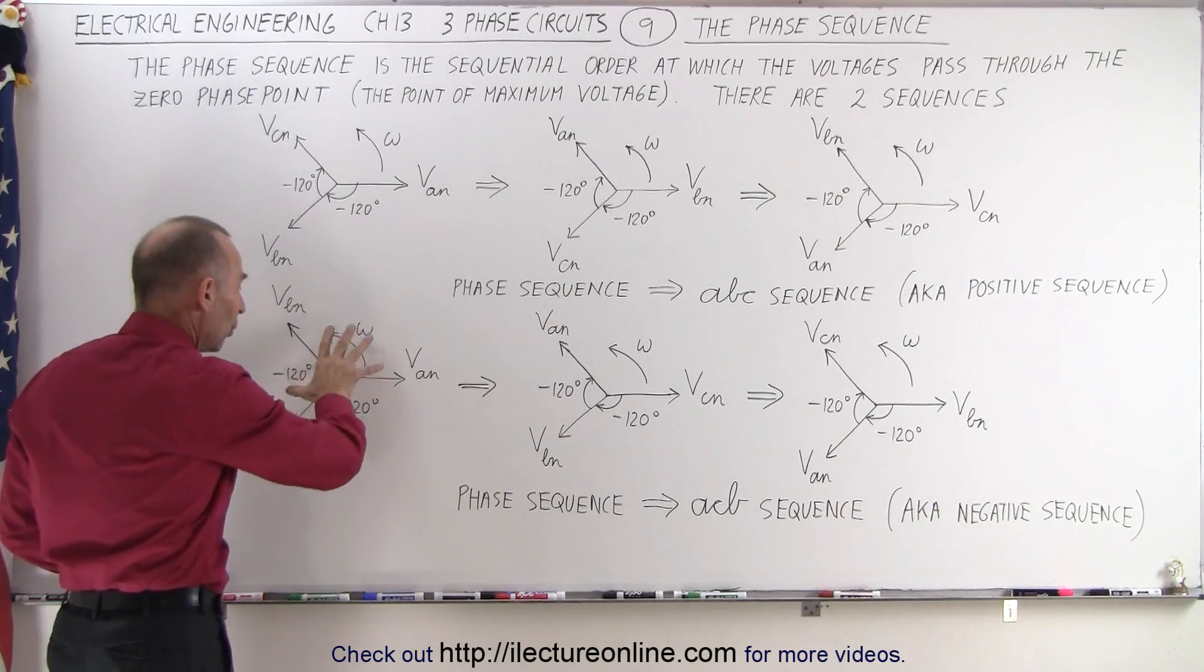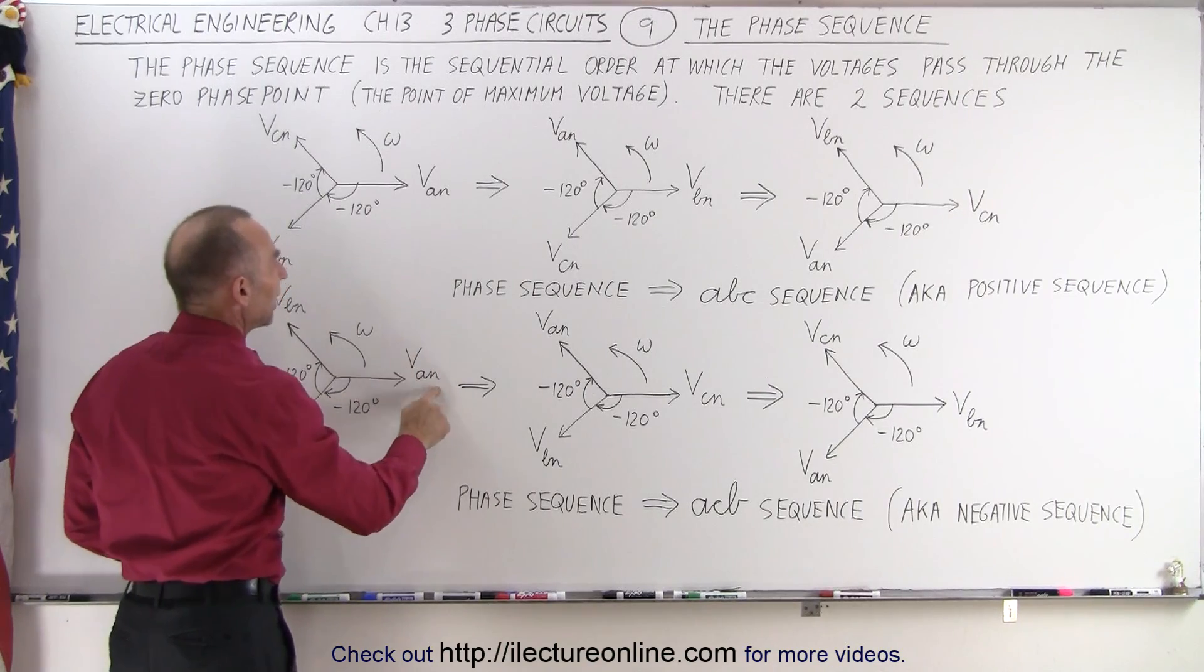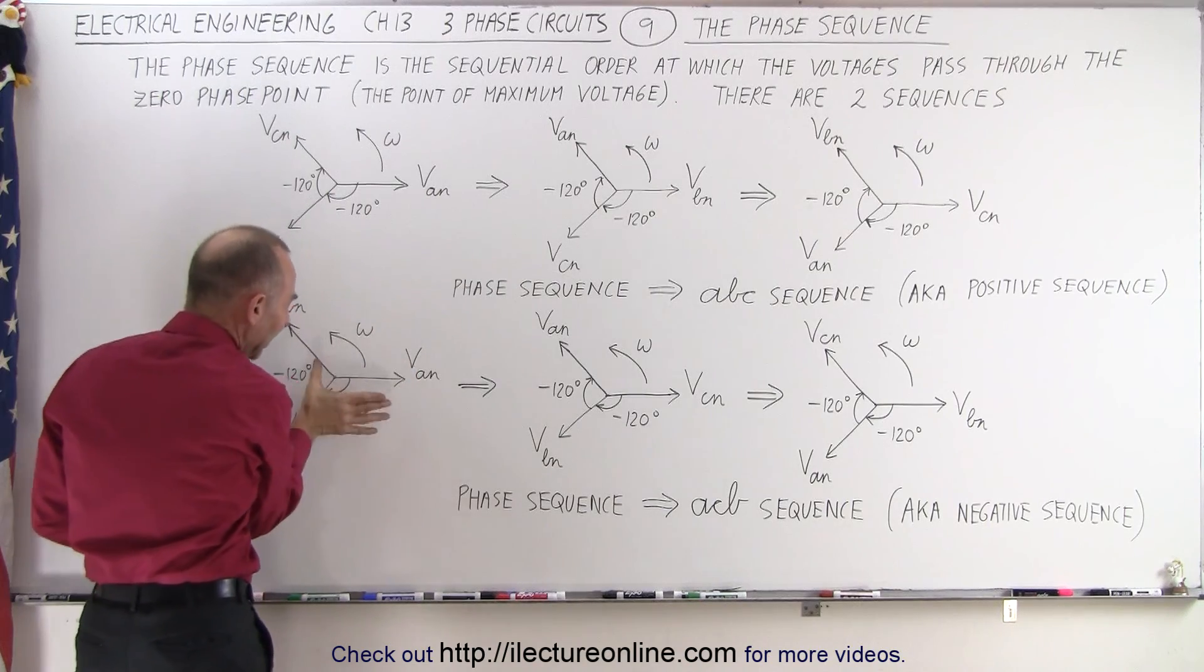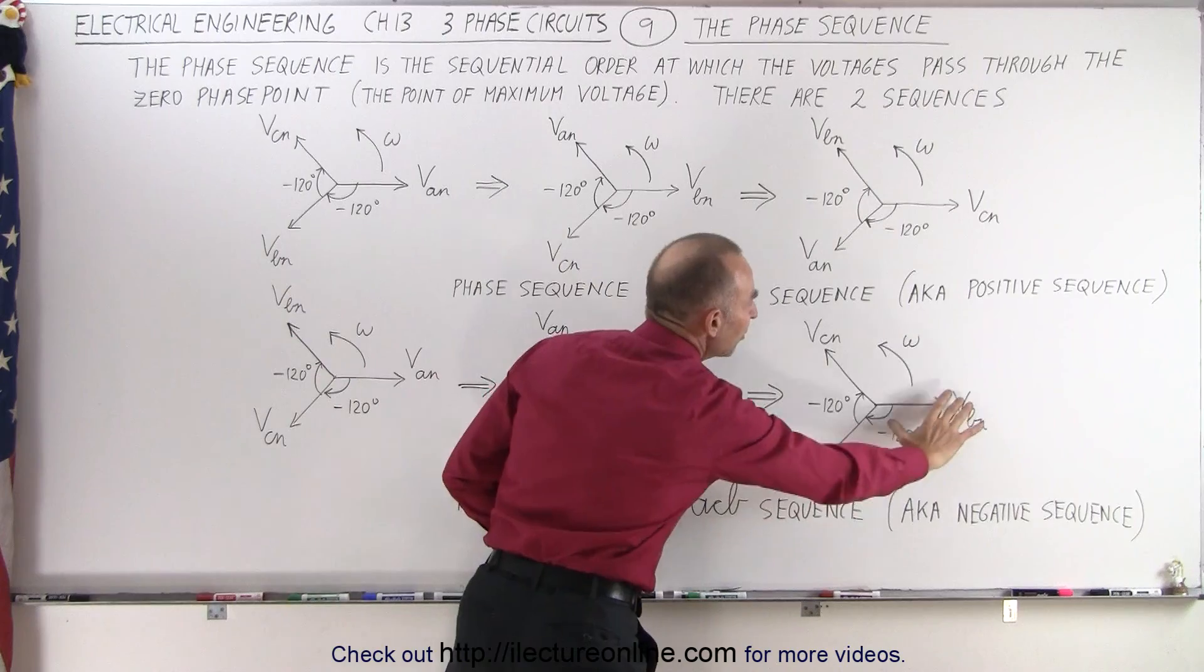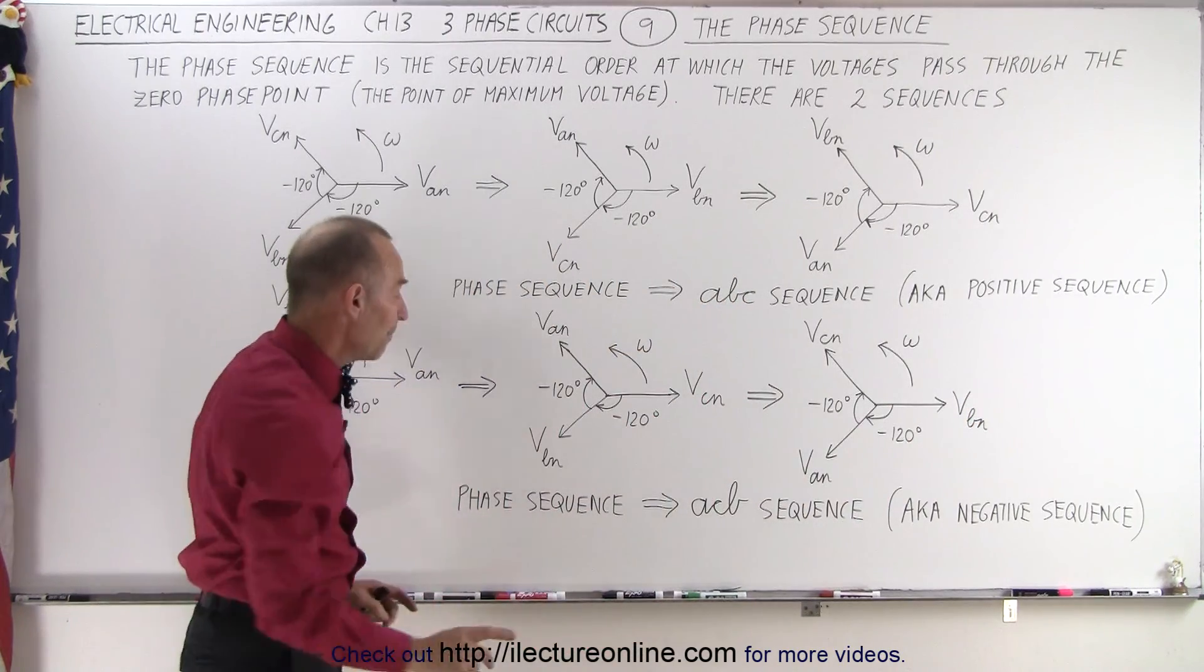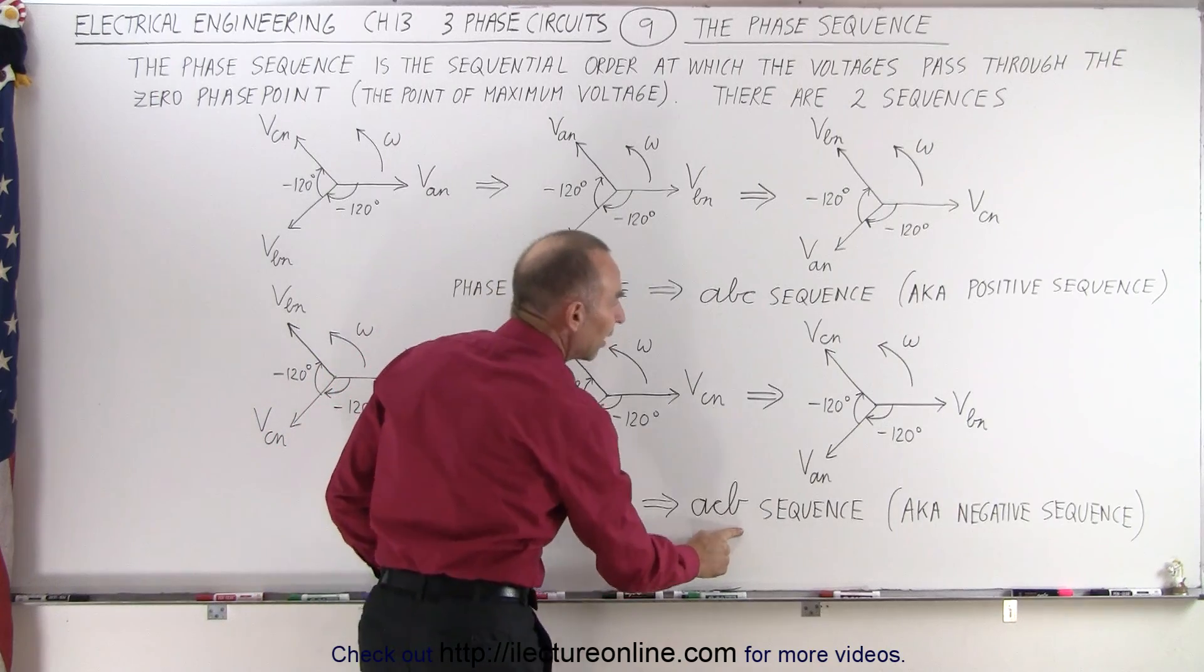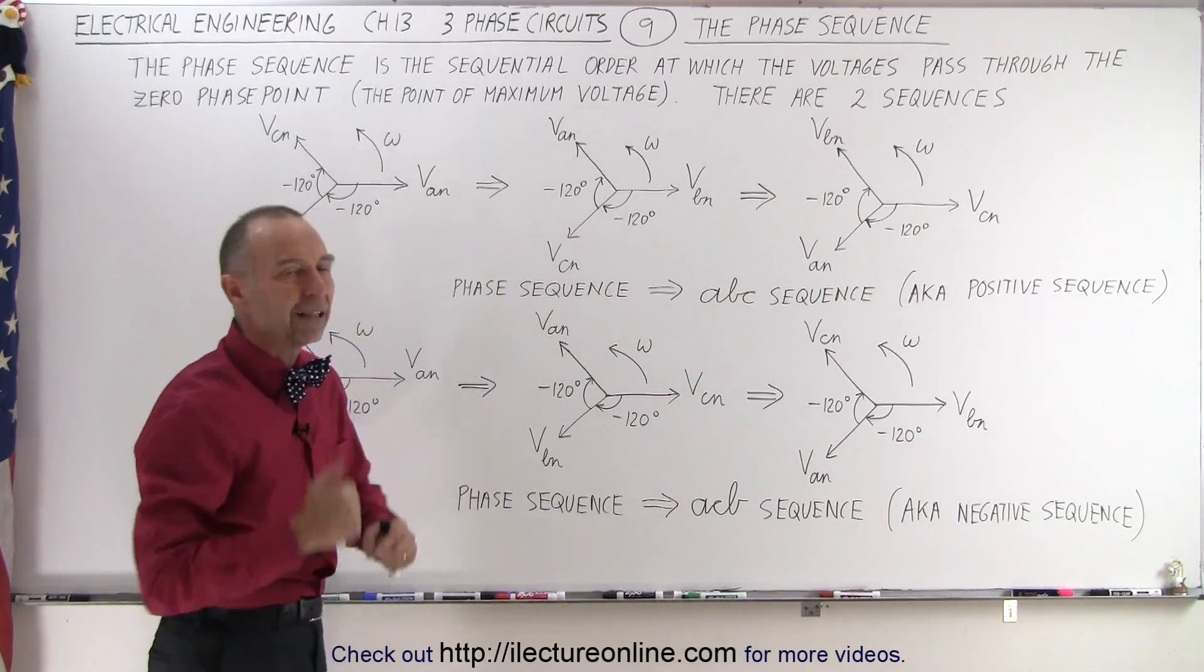Now, since the phase diagram rotates in a counterclockwise direction, we first have VA sub N at the maximum voltage point, or the zero phase point, and then you can see that VC sub N takes its place, and eventually VB sub N. So we can say that the phase sequence is the ACB sequence, and therefore this is known as the negative sequence, because they're in a different order.